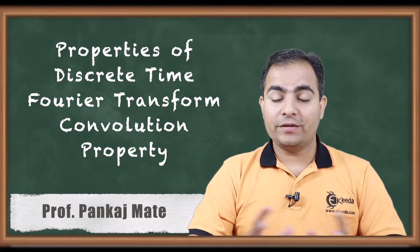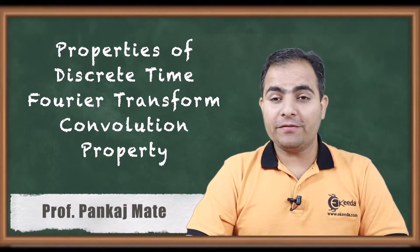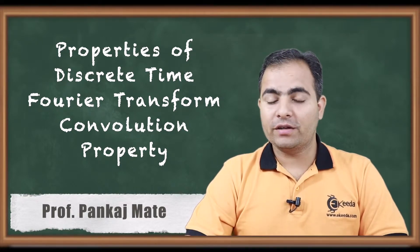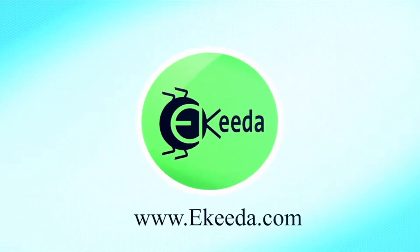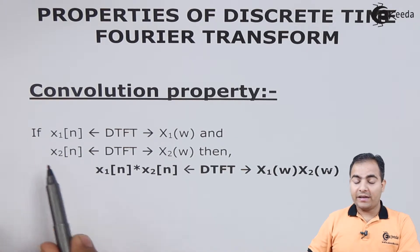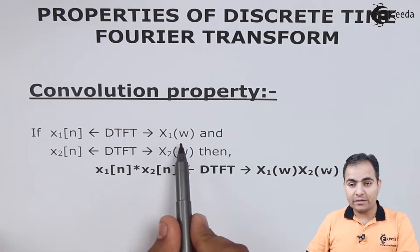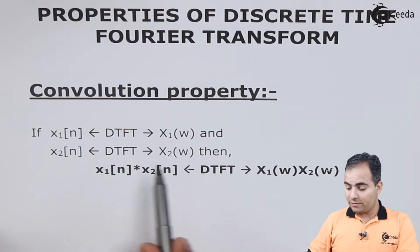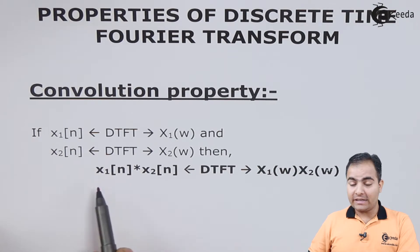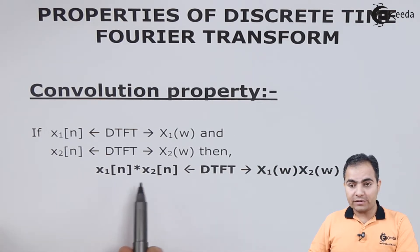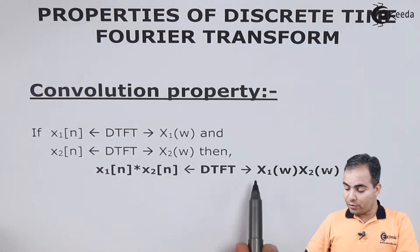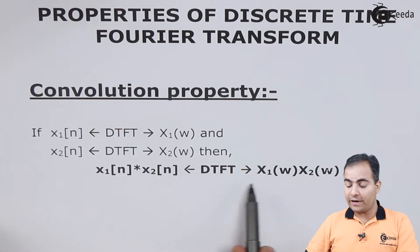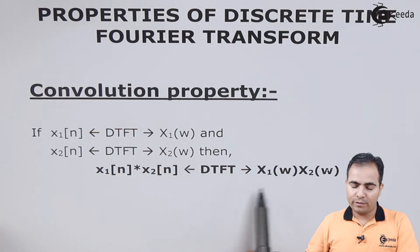What do we mean by convolution? Convolution means when two functions convolve with each other, we look at the effect of this convolution in the discrete time Fourier transform. If x1(n) has DTFT x1(ω) and x2(n) has DTFT x2(ω), then the convolution of two sequences x1(n) convolved with x2(n) in the DTFT domain is simply the product of their individual DTFTs. We find the DTFT of each function separately and then multiply both results.